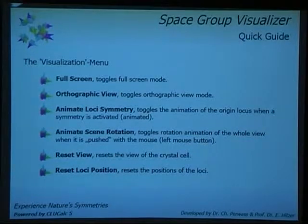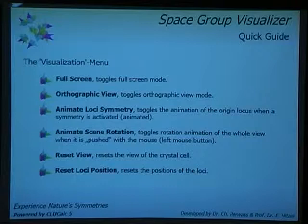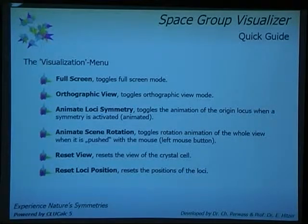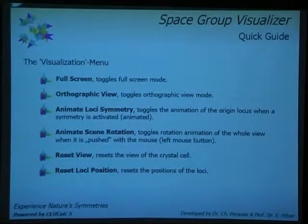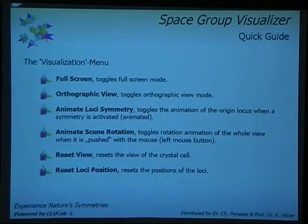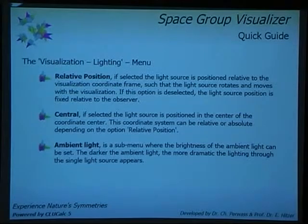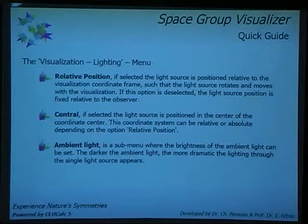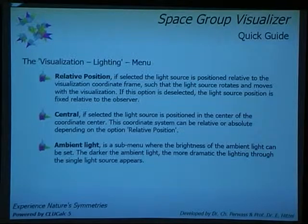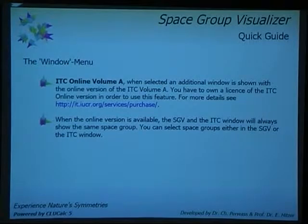On the top, there is a drop-down menu which has these options: full-screen, orthographic view. This is very important for crystallographers to compare with their tables because they always have only orthographic projections. Then you can animate the Loki symmetry so the general positions really move according to the symmetry transformation. You can animate a scene rotation to get a better three-dimensional impression. If you manipulate the view a lot, you may want to reset it. You have various lighting schemes from relative position, central lighting or ambient light.